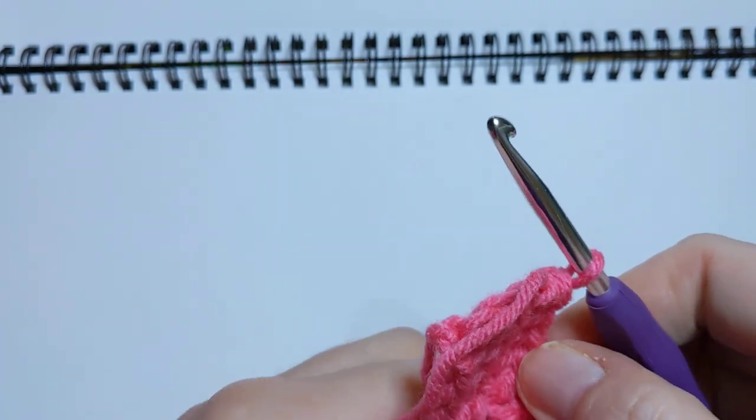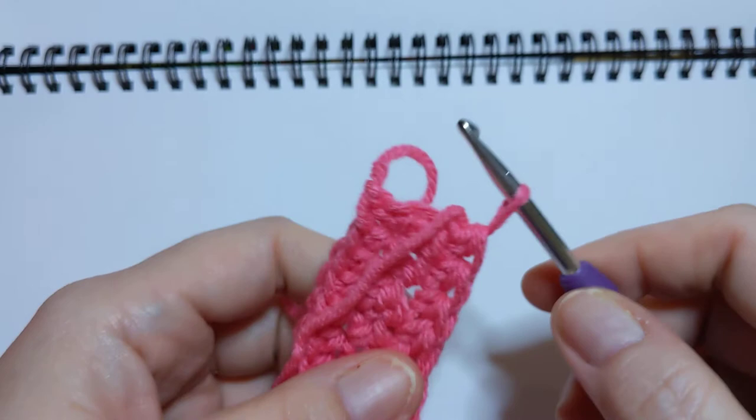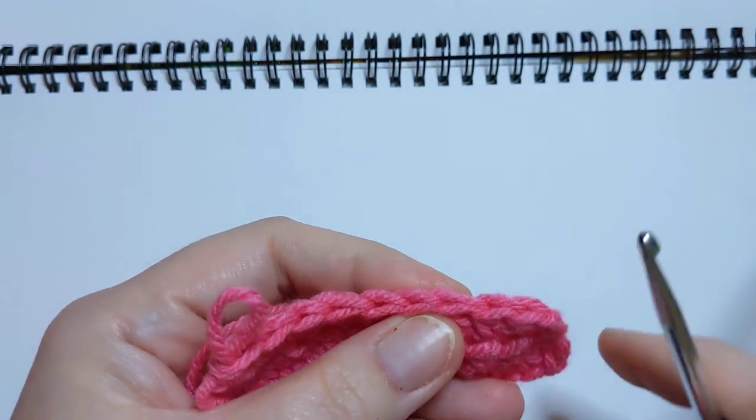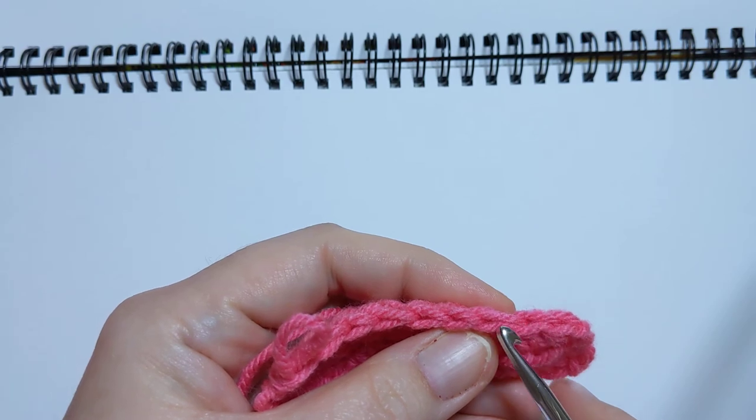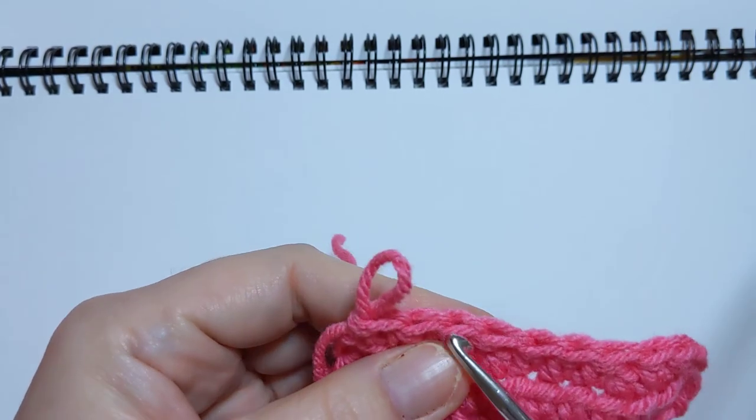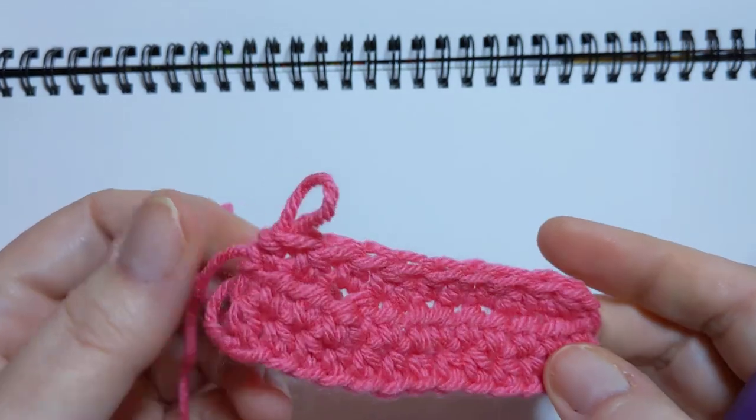Pull through all three. See how it's kind of curving up because we've reduced it so much? Yeah, let's see how many are there now. One, two, three, four, five, six, seven, eight, nine. Yep, we have decreased.